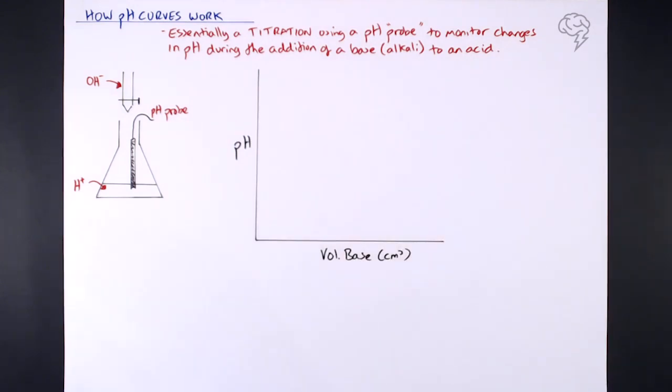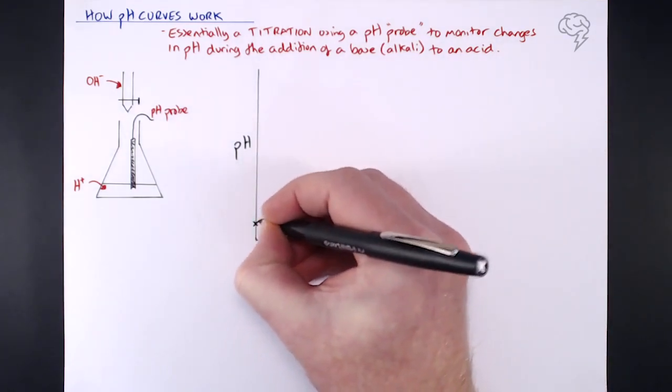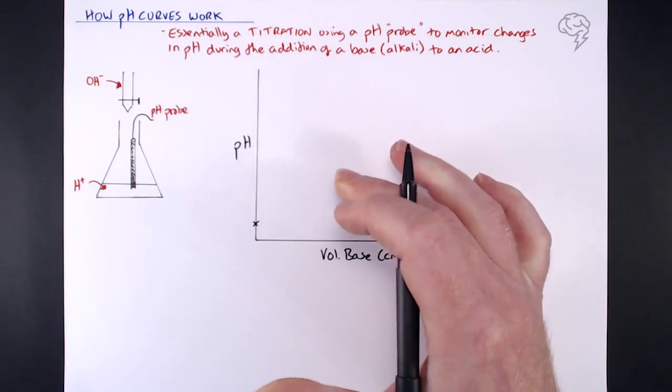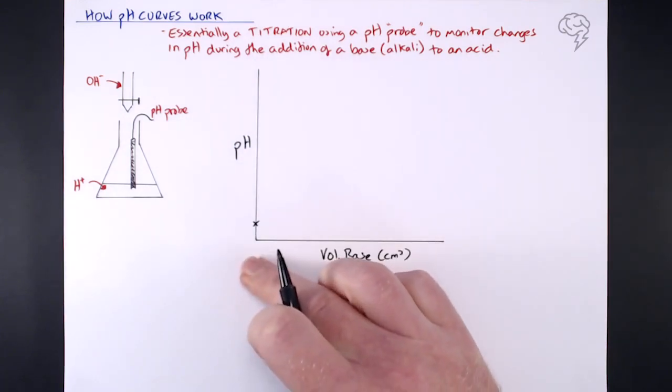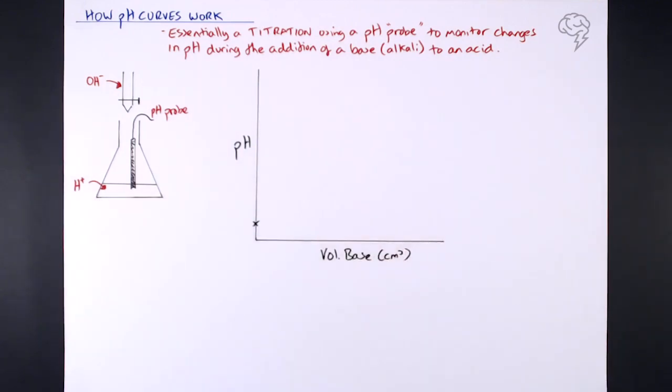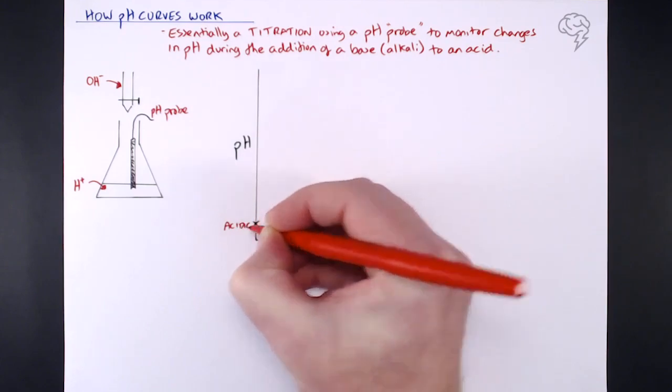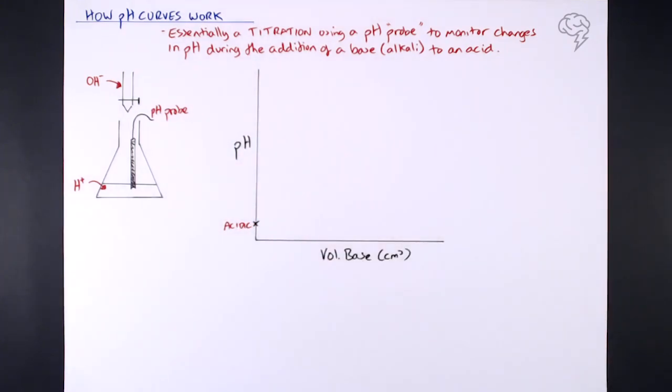And of course on the bottom this is the volume of base that we're adding. Obviously we start at zero, and as we add a little bit the pH is going to change and so on. Before we've even started, what we've got is a low pH. Why? Well of course we've just got the pH probe in the acid, so we're going to have an acidic pH to start with. So we're always starting with acidic pH, or this is the standard way of doing it anyway.